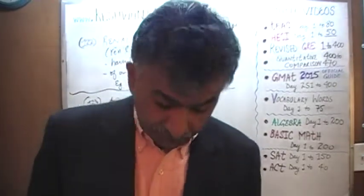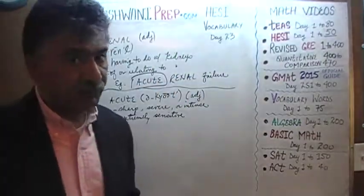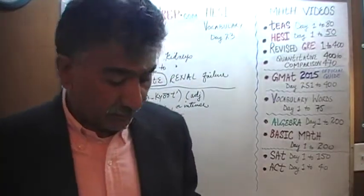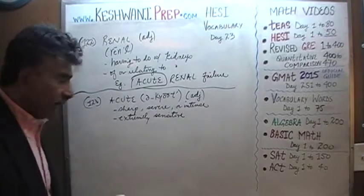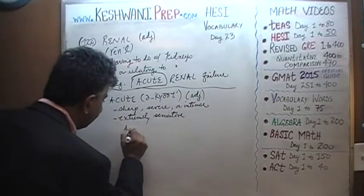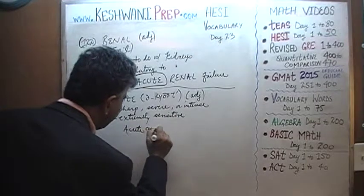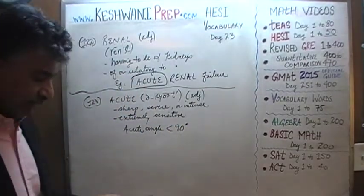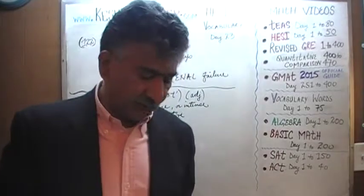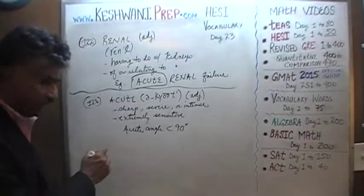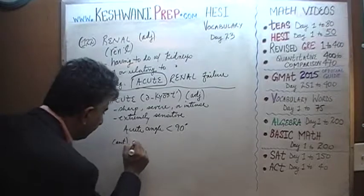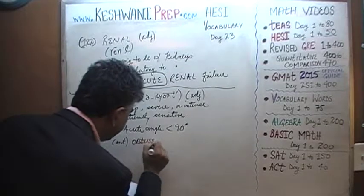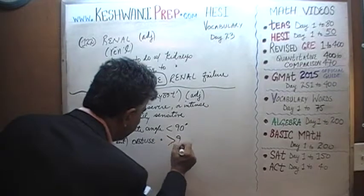Acute also has another meaning used in mathematics, which does not apply here in nursing, but since we are talking about the word, let's learn the other value. In mathematics, an acute angle is something that is less than ninety degrees. The opposite of acute in mathematics — the antonym — would be obtuse. An obtuse angle is more than ninety degrees.